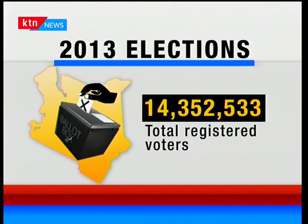We also had Raila Odinga vying for the third time, running under the Coalition for Restoration and Democracy, CORD. He garnered 5,340,546 votes — 43.70%. The first time he vied for presidency was in 1997, then 2002, and now 2013. He lost to Uhuru Kenyatta. He won in 26 counties plus the diaspora, and out of the 25% requirement, he won in 30 counties.